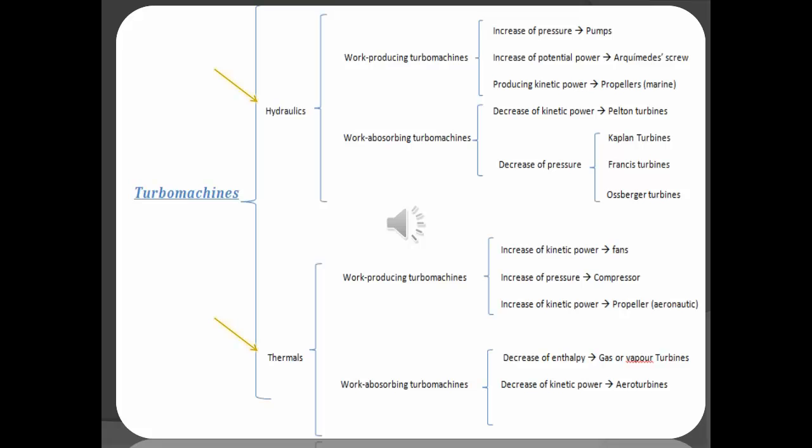According with the direction of the power, we have other two kinds of turbomachines, the work-absorbing and the work-producing. And finally, we have some examples of turbomachines, but now we are going to continue with the transparency.